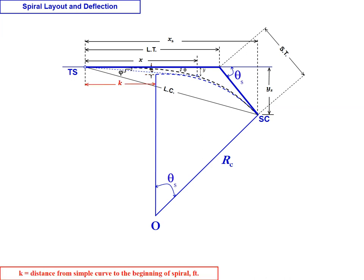K is the distance from the simple curve to the beginning of the spiral. So if, in the case of a simple curve being present, K would be that distance between the TS and the PC.